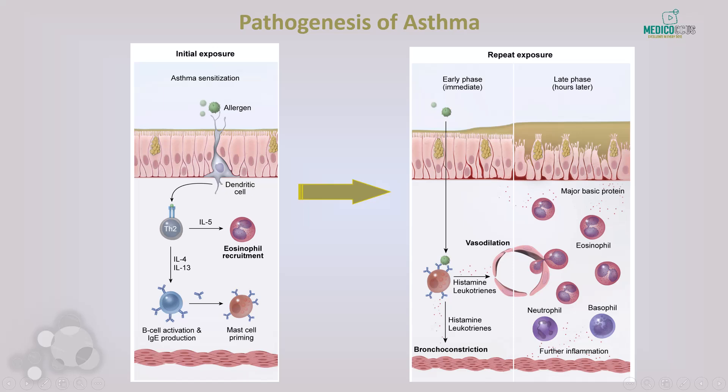Let's go through this detailed visual representation of the pathogenesis of asthma, which illustrates how the immune system responds to allergens and leads to asthma symptoms. This image is broken down into three key phases: initial exposure and repeated exposure, which contain early phase and late phase reactions.